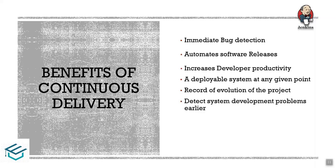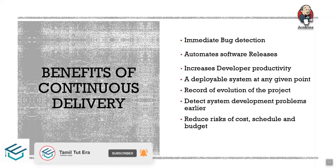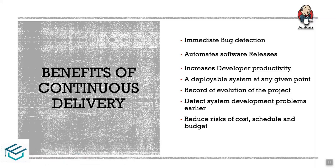Continuous delivery helps detect system development problems earlier. Problems detected during development are much easier to fix. If a large code release has security issues, detecting them early and moving to production early is very useful. This reduces risk, cost, and budget — saving time and providing scheduling benefits.